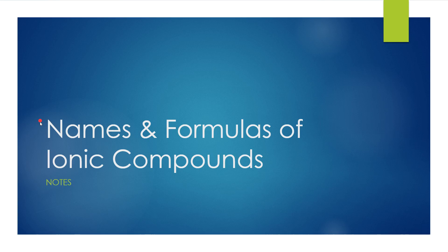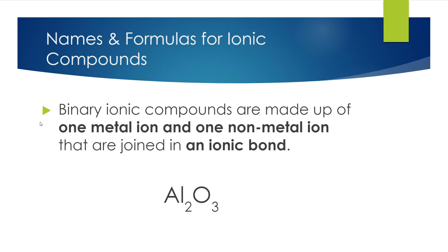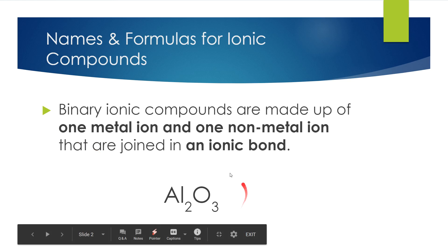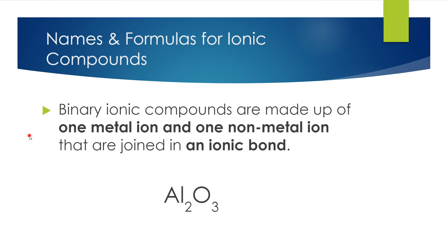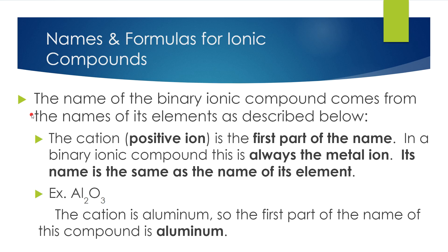Names and Formulas for Ionic Compounds. Binary Ionic Compounds are made up of one metal ion and one non-metal ion joined together in an ionic bond. The term 'binary' refers to the way that this is written. The name of a Binary Ionic Compound comes from the name of its elements. The cation, or positive ion, is the first part of the name. In a Binary Ionic Compound, this is always the metal, and its name is the same as the name of its element.